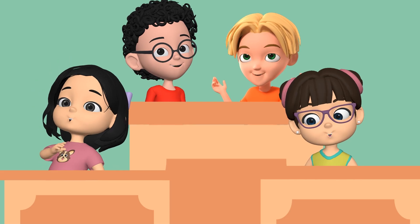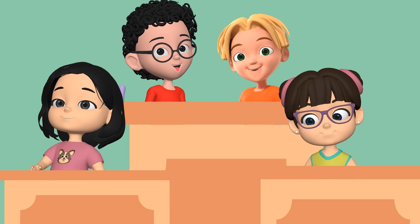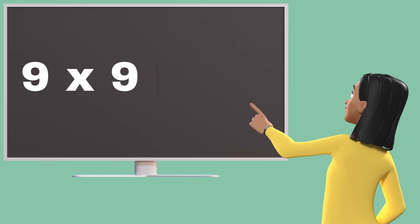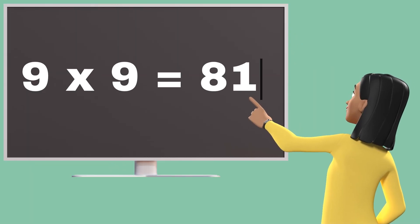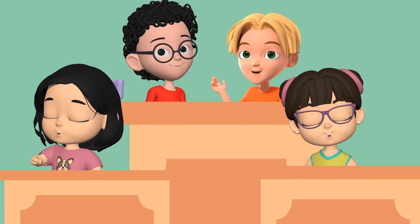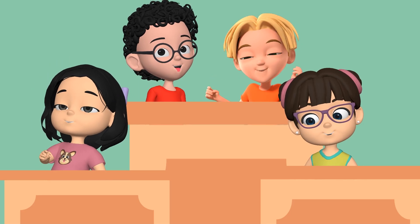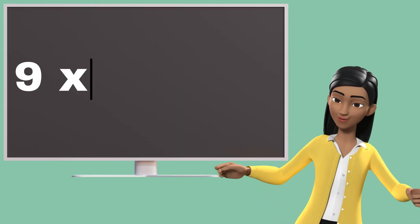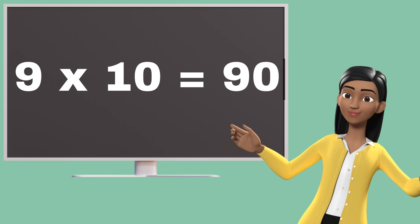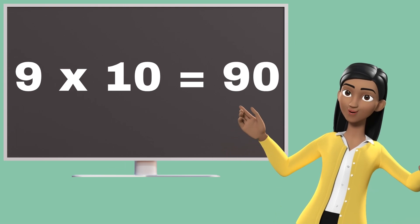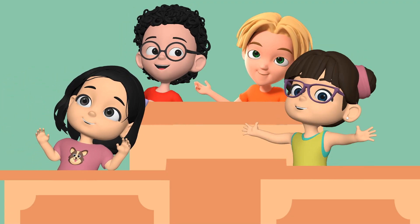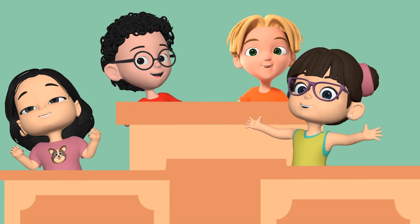Nine eights are seventy-two. Nine nines are eighty-one. Nine nines are eighty-one. Nine tens are ninety. Nine tens are ninety.